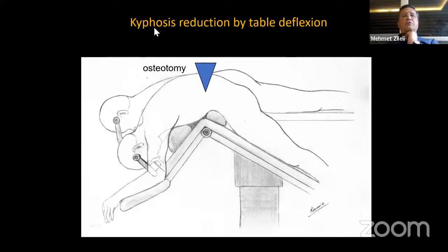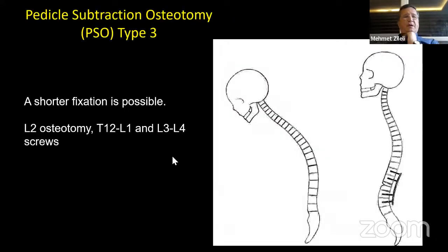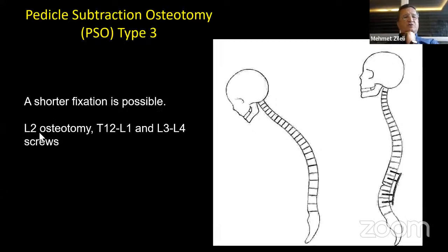In an ankylosing spondylitis patient, you can place pedicle screws two above and two below, and close the osteotomy under compression on the screw heads. Or you can reduce the kyphosis by table deflection. This is a type 3 osteotomy according to the Schwab classification. A shorter fixation is possible — in this picture the surgeon did an L2 osteotomy with T12, L1, L3, and L4 screws.